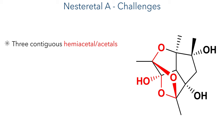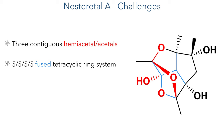This includes three contiguous hemiacetal and acetals, a tetracyclic 5-5-5-5 fused ring system, and seven contiguous stereocenters, which makes this compound a very complex target despite its small size. So let's look at the retrosynthetic strategy that these authors took.